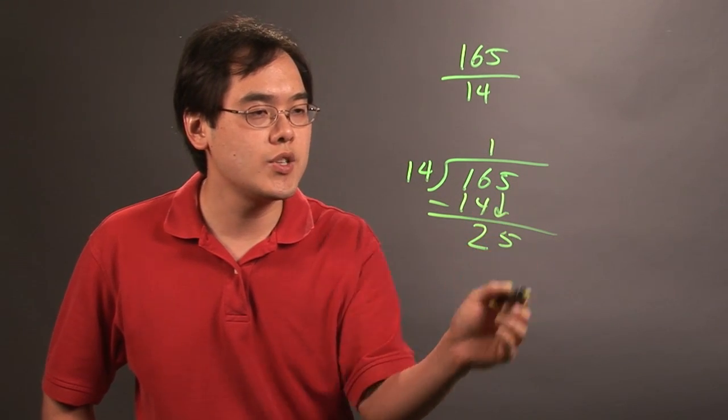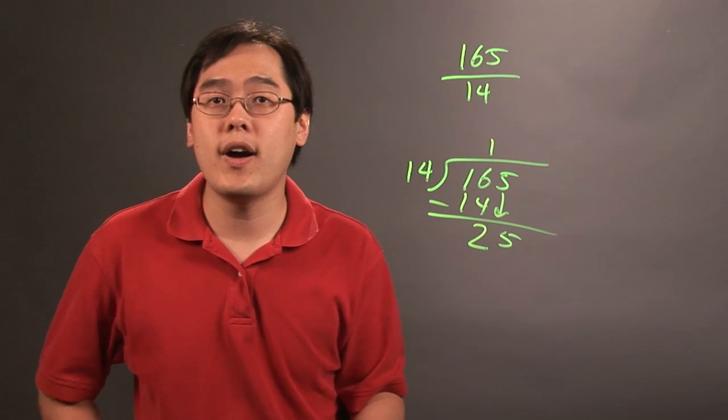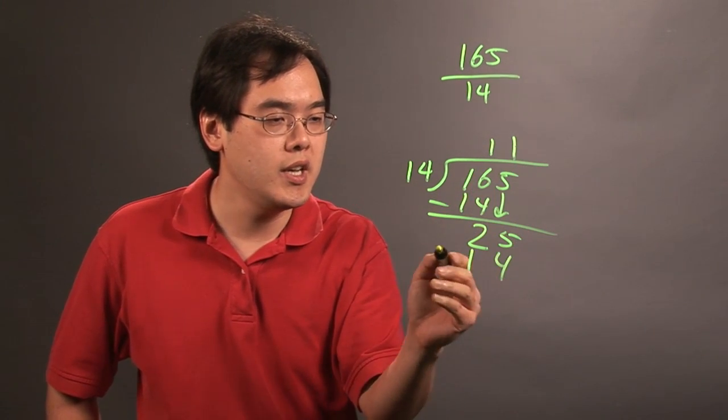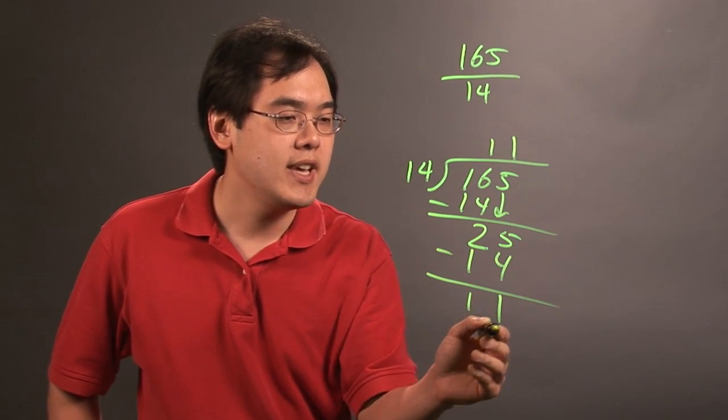Bring down the 5, of course. And then 14 goes into 25 one time. So 1 times 14 is going to be 14. Subtraction, you're going to have 11.